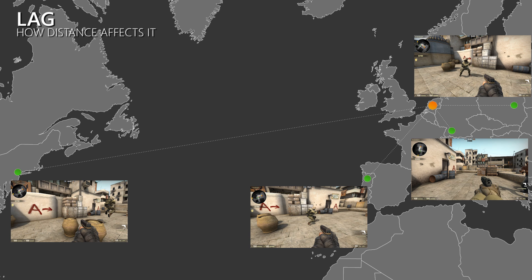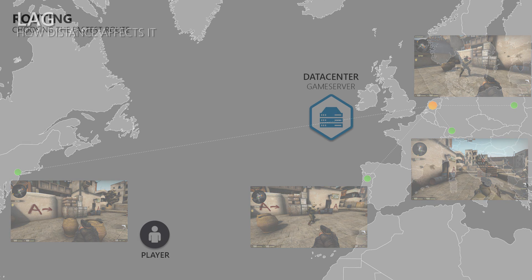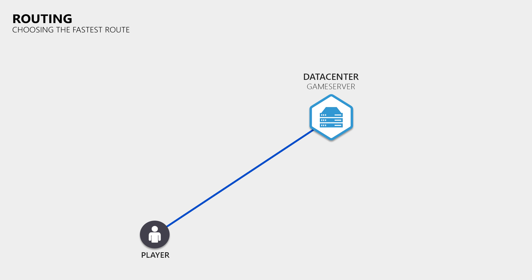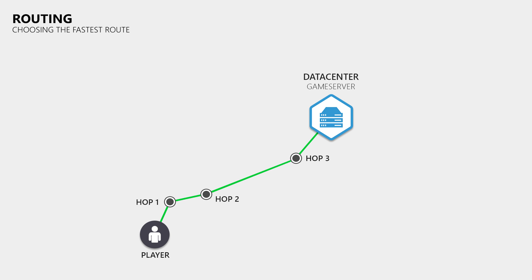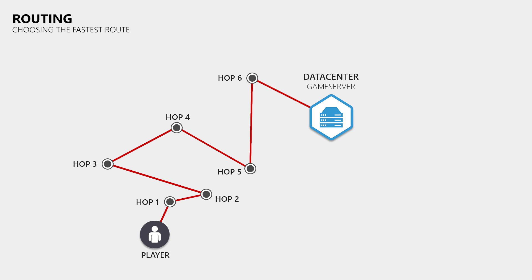So the distance between the client and the server defines how long it takes data to travel between them. However, you can't take a map, draw a line between your home and the location where the server is hosted and then calculate your ping based on that distance, because the copper and fiber optic cables take a very different route. The data that you send to the server has to pass through multiple routers before it even reaches the server. When a router has to forward data, it always tries to find the best and fastest route. However, it can happen that a router either chooses the wrong route, or has to choose a worse one when the better one is down. Such detours can result in much higher pings and an increased risk of packet loss, since your data might have to pass through many more routers then.